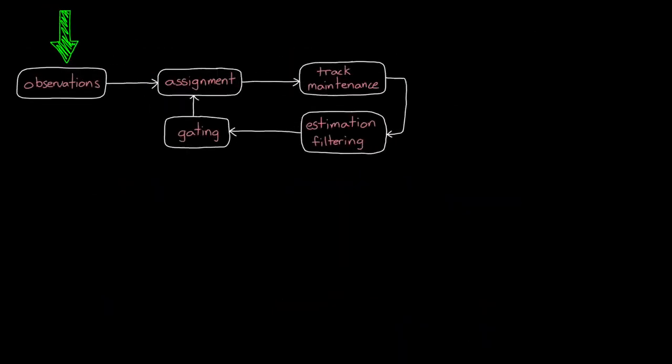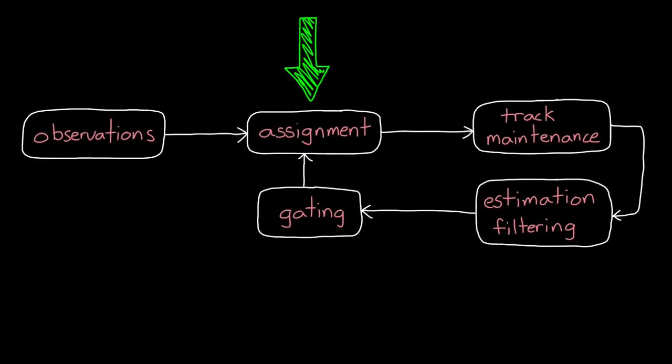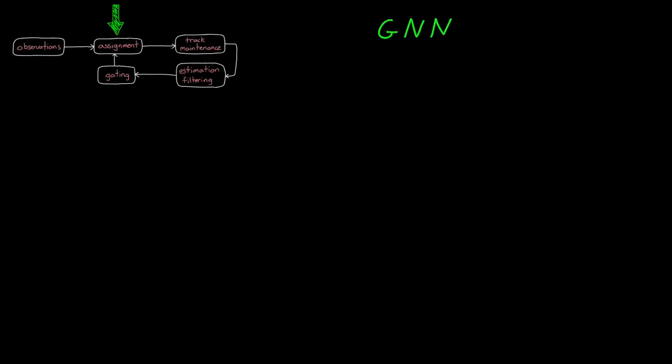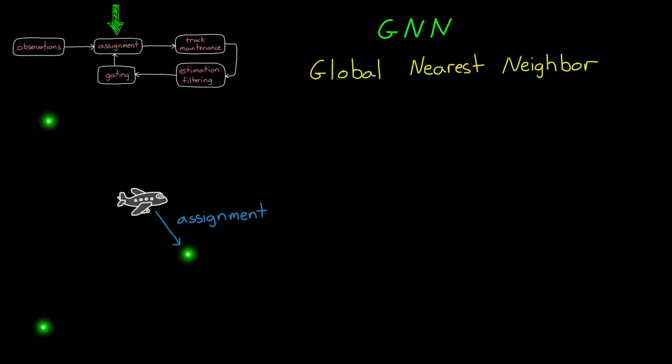Assignment is the process of matching an observation to a tracked object, or if you're into the whole brevity thing, it's matching it to a track. And possibly the simplest assignment algorithm to think about is the GNN, the global nearest neighbor. This simply assigns a track to the nearest observation. But the interesting thing here is that it's not necessarily the nearest Euclidean or geometric distance, but the nearest probabilistic distance like you get with the Mahalanobis distance. And here's why.